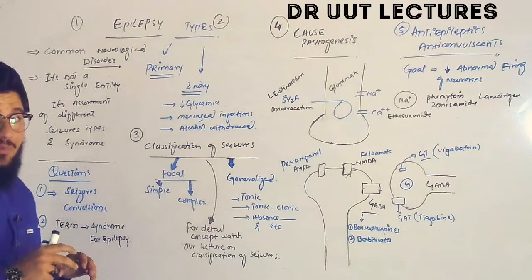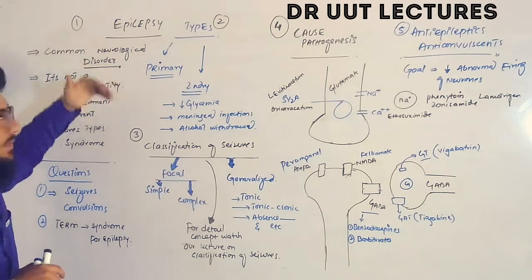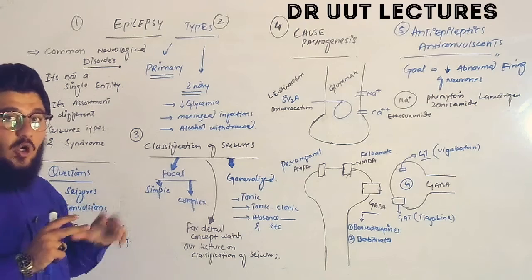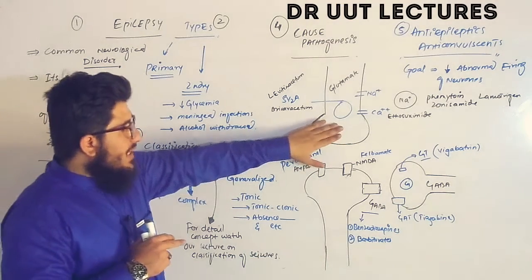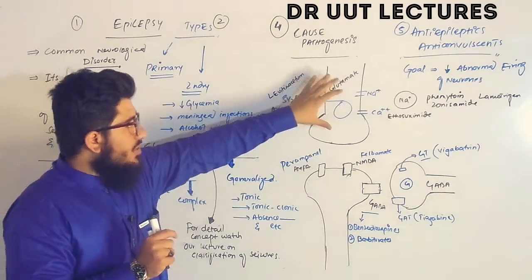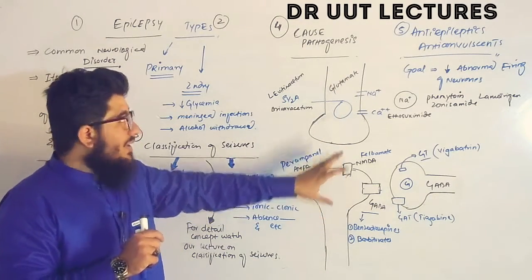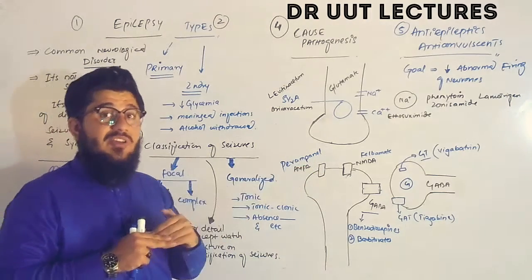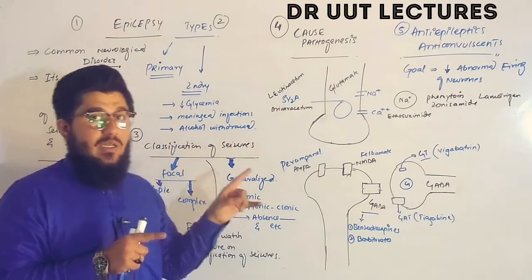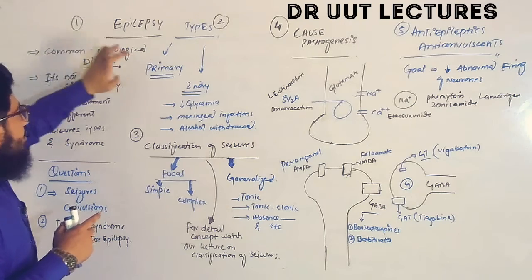Epilepsy is a common neurological disorder. Here we have a pre-synaptic neuron and a post-synaptic neuron. The normal pathway is the transfer of a signal from pre- to post-synaptic neuron. What happens in epilepsy is that this neuronal activity is somehow increased, which is why we call it a neurological disorder.